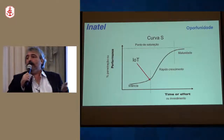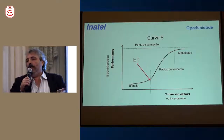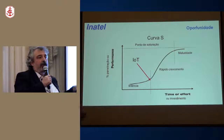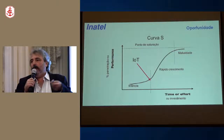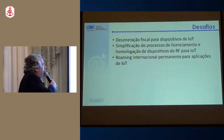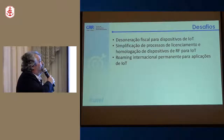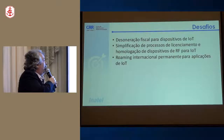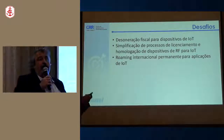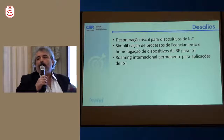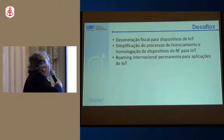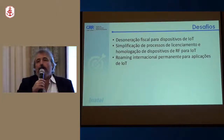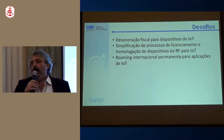O 5G também está nascendo agora. Já existem algumas redes comerciais sendo implementadas, mas que atendem apenas o primeiro cenário. O 5G ainda demanda desenvolvimento bastante significativo para os próximos anos. Os desafios incluem: desoneração fiscal para dispositivos de IoT, simplificação de processos de licenciamento e homologação de dispositivos de RF para IoT, e o uso de roaming internacional permanente para aplicações embarcadas em coisas que se deslocam mundialmente, como automóveis, eletrodomésticos e wearables.